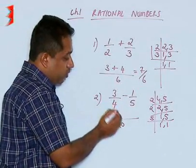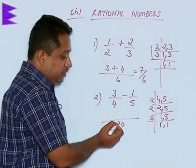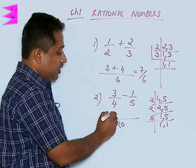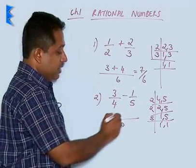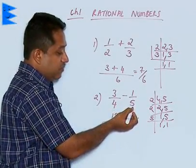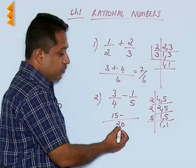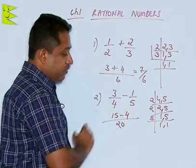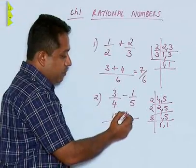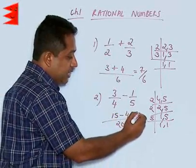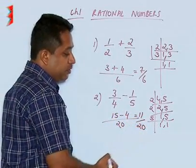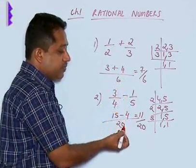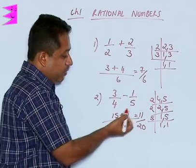Now, we check 4 goes how many times in 20. 4 goes 5 times. 5 is multiplied by the numerator here, so 5 into 3, we are going to get 15 minus. We check 5 goes how many times in 20 here. 5 goes 4 times. 4 is multiplied by the numerator here that is 1, so we get 4 here. 15 minus 4, we are going to get 11 upon 20. These are the methods by which we can add or subtract rational numbers by taking LCM.